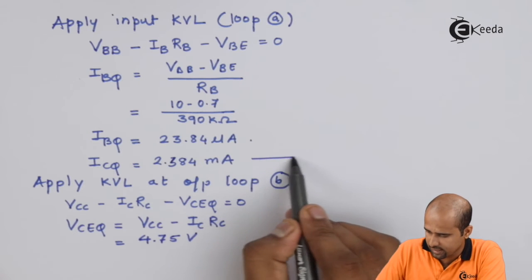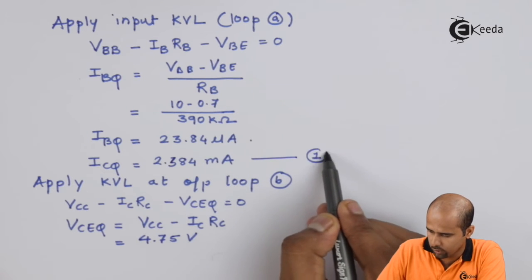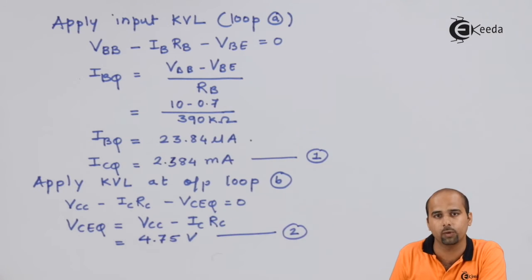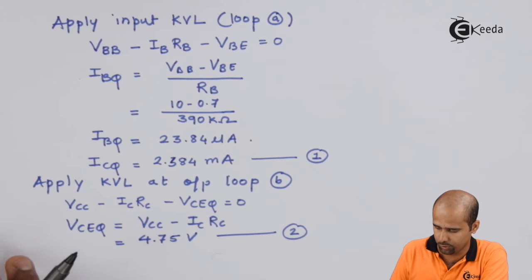We'll treat this as equation number 1 and this as equation number 2, from where we'll get the value of Q point.